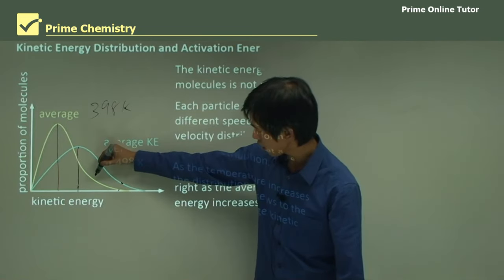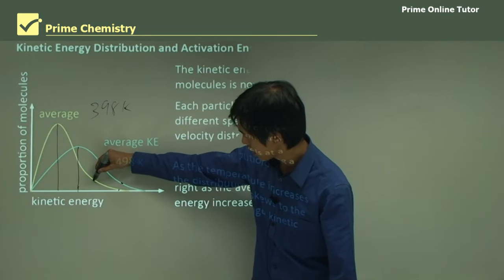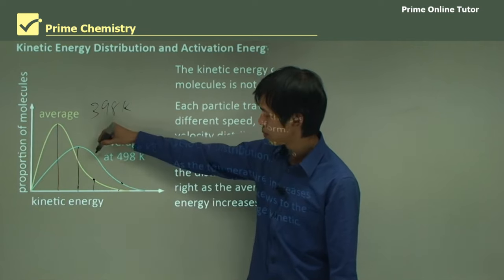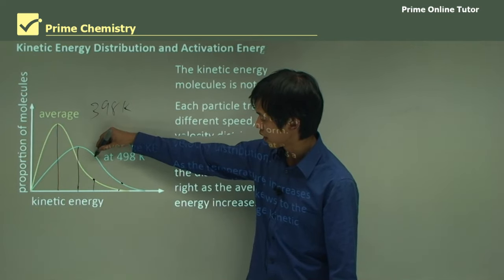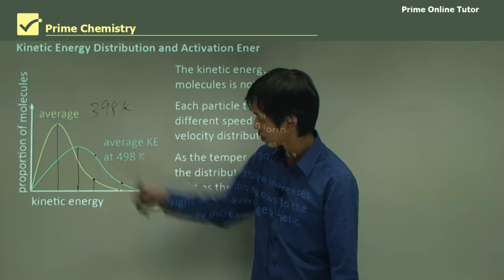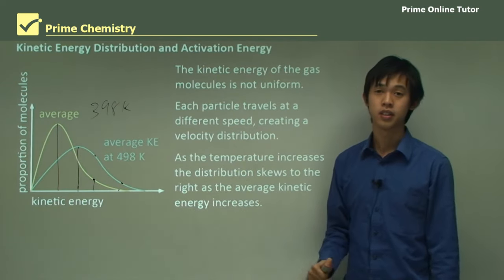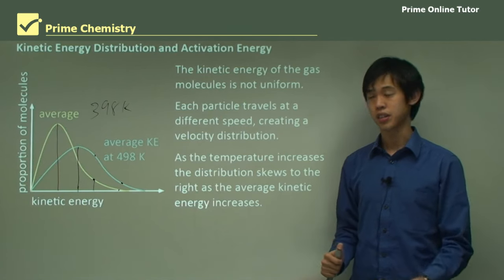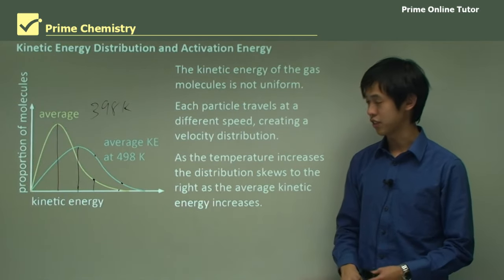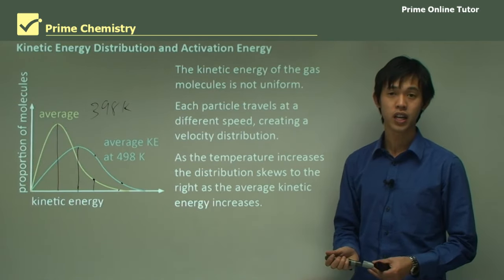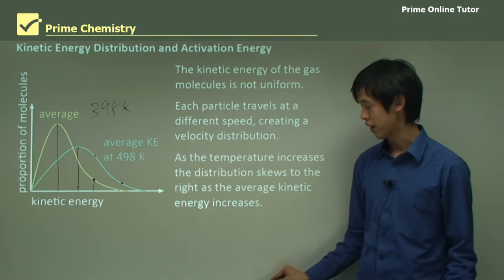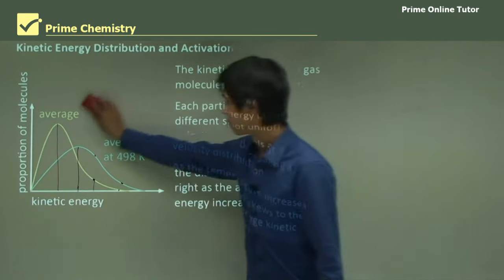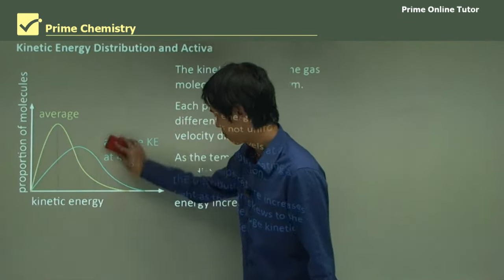For instance at a certain energy level there are not many particles on the yellow line, but on the blue line there's almost double the number of particles. By increasing the temperature, we've shifted the whole distribution to the right, getting more available energy out of the system.